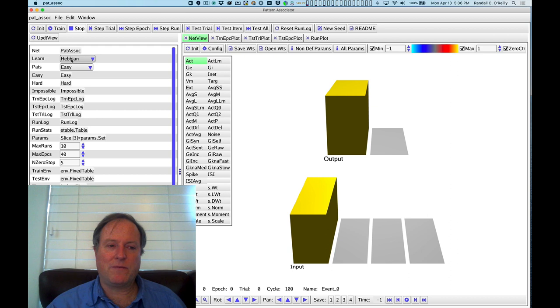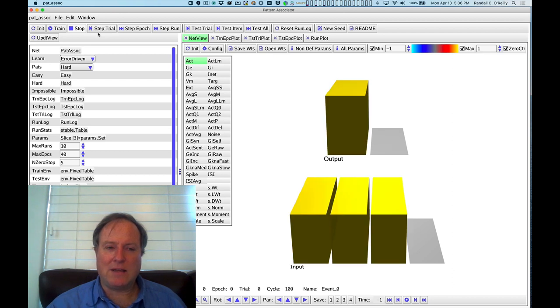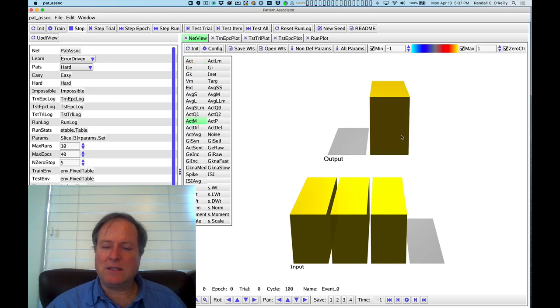So we can go back to our model and switch the network. Instead of using Hebbian, we can use error-driven learning. Let's initialize it and go back to using the hard problem. Now we're going to see how the network works trial by trial. In this case, we're allowing the network to be active in what we call the minus phase. This activity (ACT-M) is what the network produced on its own based on the input units being active, but with no enforced or clamped activity in the output layer. This is the value of the activity y, the receiving activity, in the absence of any clamping.